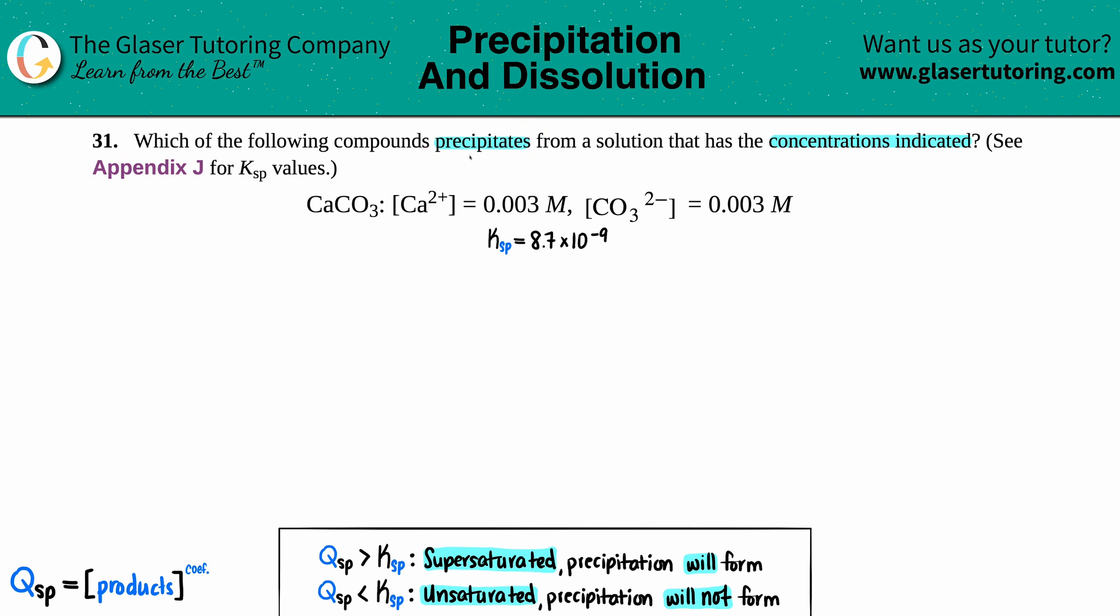A precipitate just means solid that did not dissolve in your solution. You added way too much, way over the limit, and some of it isn't going to dissolve.